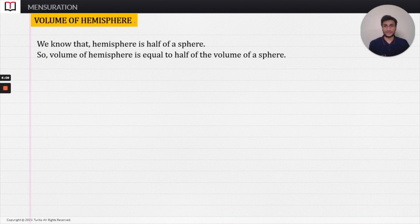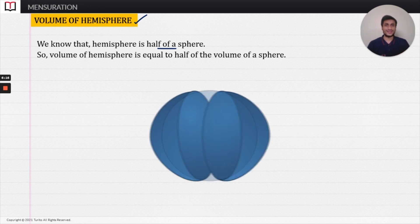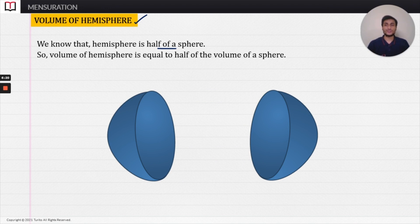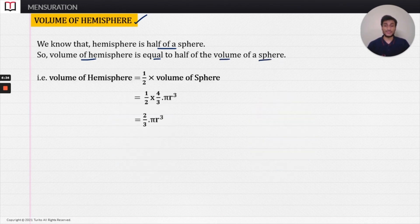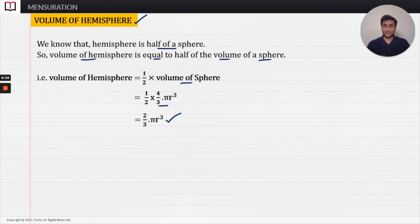Now let us find the volume of the hemisphere. A hemisphere is half of a sphere — if you cut a sphere into two equal halves, you get a hemisphere. So the volume of the hemisphere equals half the volume of the sphere: (1/2) × (4/3)πr³ = 2/3 πr³. So the volume of the sphere is 4/3 πr³ and the volume of the hemisphere is 2/3 πr³.